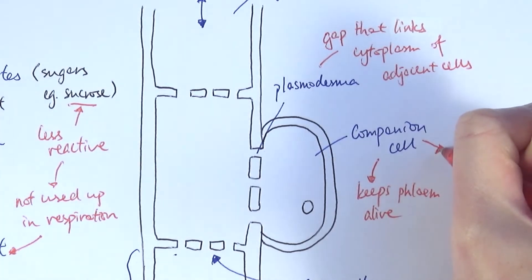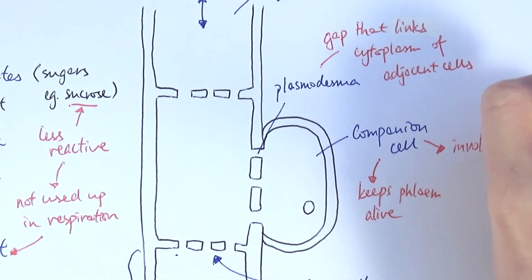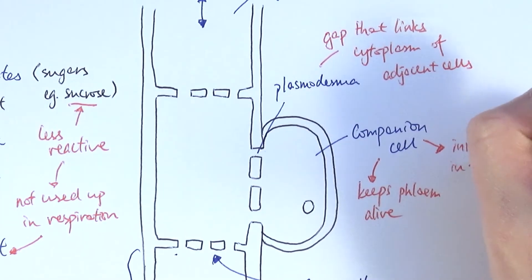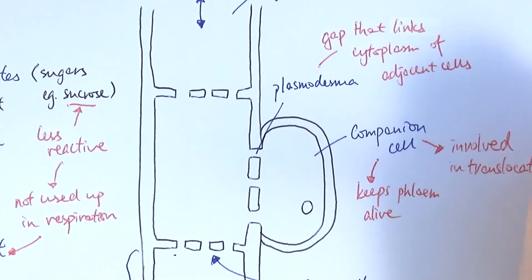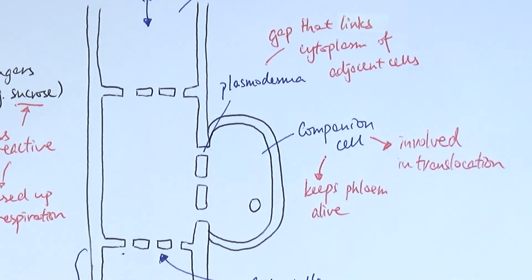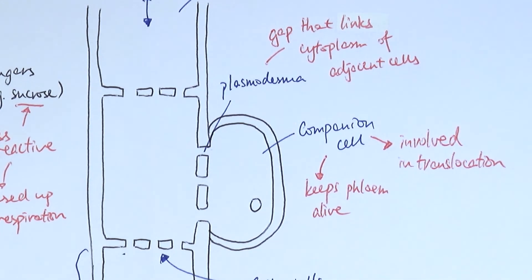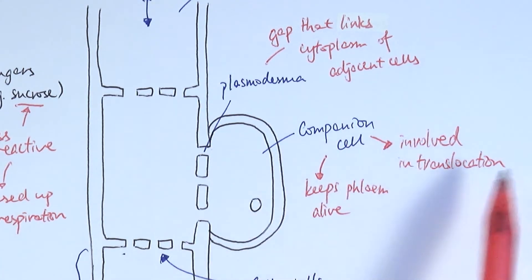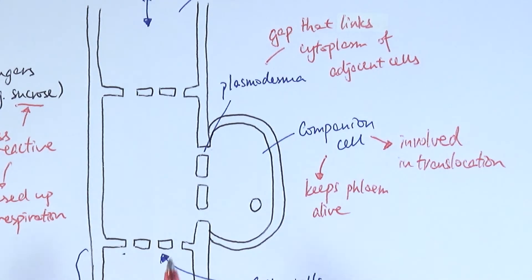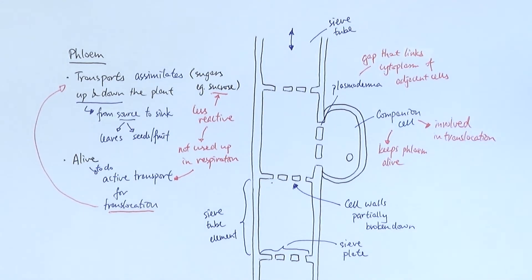The companion cell keeps the phloem alive because they are able to share resources between them. Another really important function of the companion cell is its key role in translocation. Remember, translocation is the transport of assimilates in the phloem from the source to the sink, and active transport is needed in this process. The companion cell uses energy to move sucrose into itself from the surrounding area and then passes it on to the sieve tube. So that's the function and structure of phloem as well.